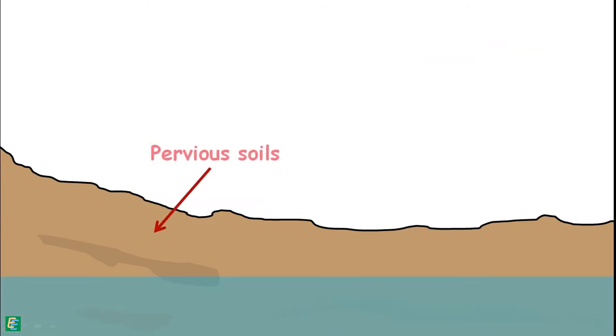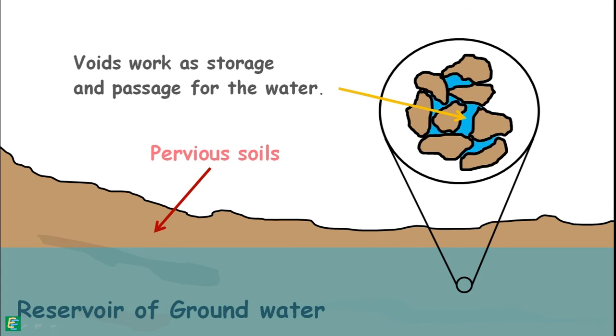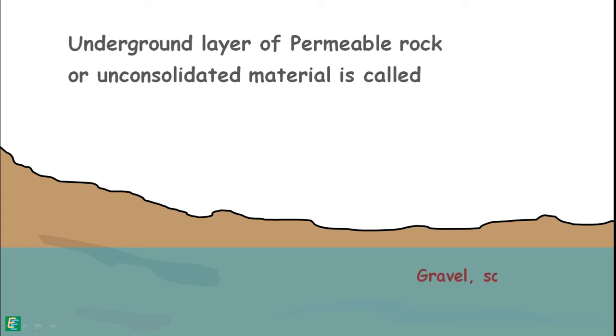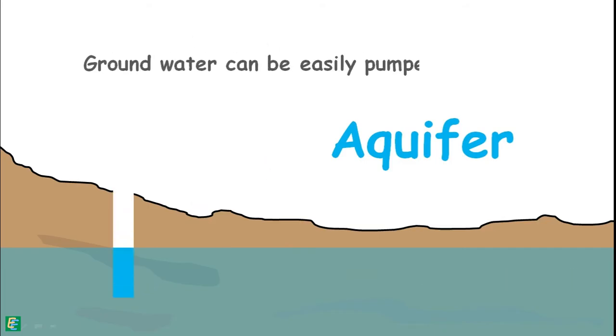Pervious soils in the ground are the reservoirs of groundwater. Their voids work as storage and passage for water. Such an underground layer of permeable rock or unconsolidated material such as gravel, sand, or silt is called an aquifer. It is a body of saturated rock through which water can easily move. The groundwater from the aquifer can be easily pumped out.